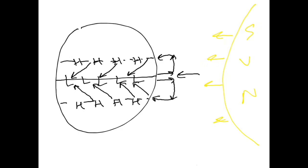The air converges at the equatorial low, but rather than calling it the equatorial low, we want to call it the intertropical convergence zone, or ITCZ. We use this name because this low-pressure system actually moves with the seasons — the ITCZ is where the easterly trade winds converge. Understanding how this whole dynamic shifts during the course of the year requires looking at the seasons.